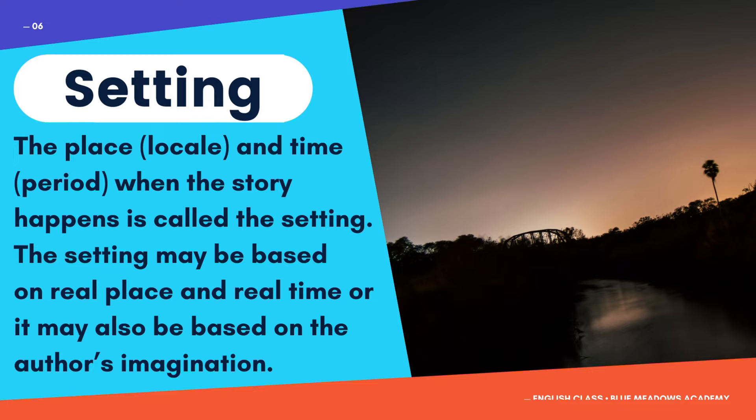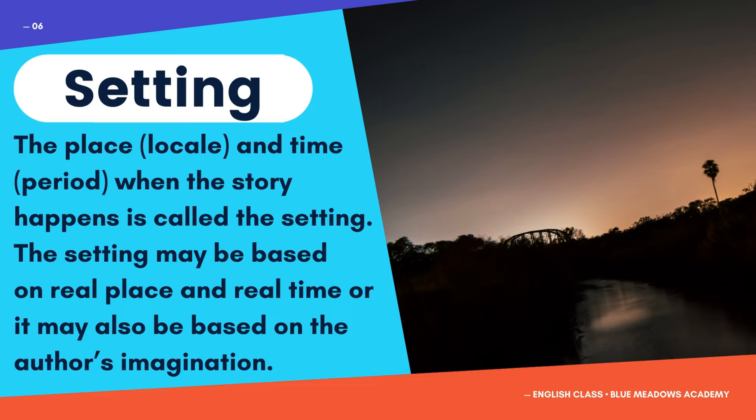The next element of a short story is the setting. It refers to the place or locale and time or period when the story happens. The setting may be based on a real place and real time, or it may also be based on the author's imagination. When analyzing the setting of the story, consider where the action is taking place. Most authors use descriptive words to describe the landscape, scenery, buildings, season, or weather to provide a strong sense of setting, which will help the reader visualize the story and connect to the story's plot.